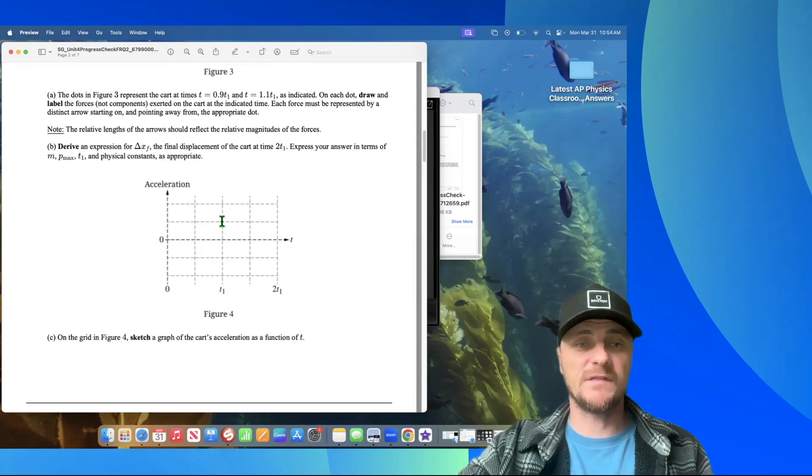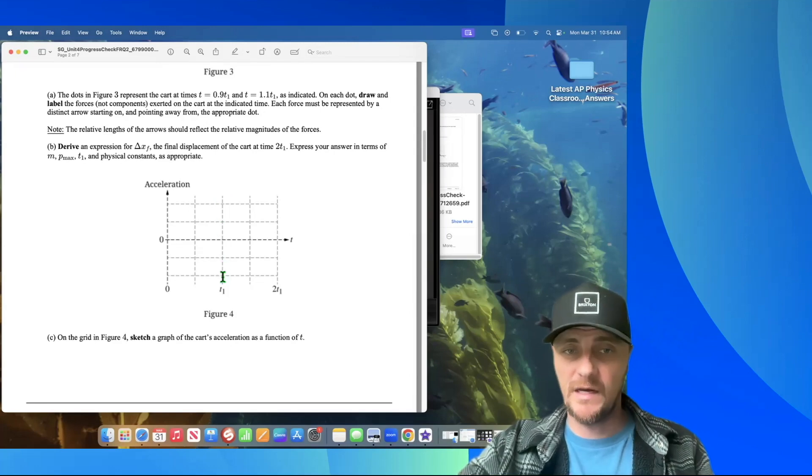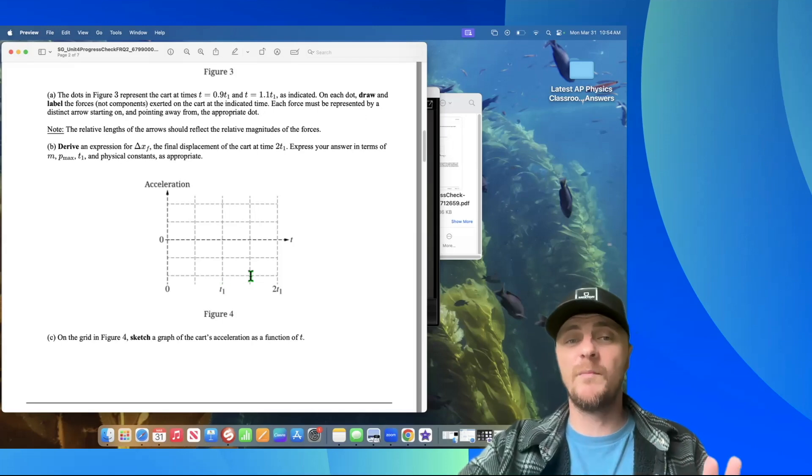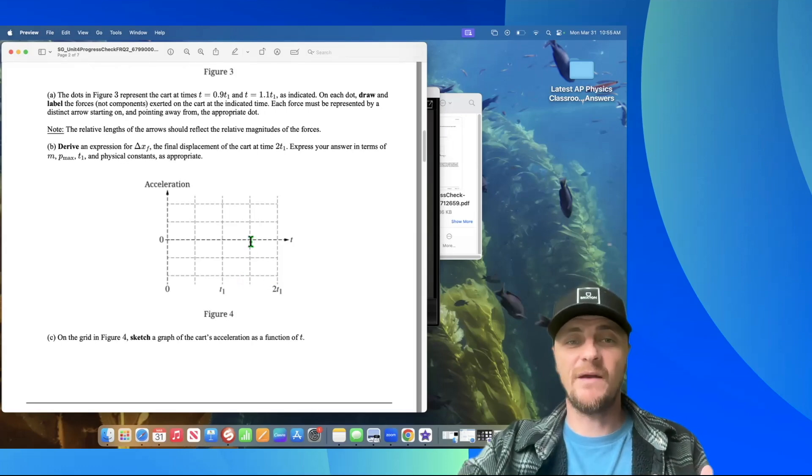Then we have a negative force that's twice as big, so we would have a negative acceleration that's twice as big, and I'd take a straight line from t1 to 1.5 t1. And then finally, we have no momentum from 1.5 t1 to 2 t1, so we would have a straight line saying we have zero acceleration during that time interval. C is done.